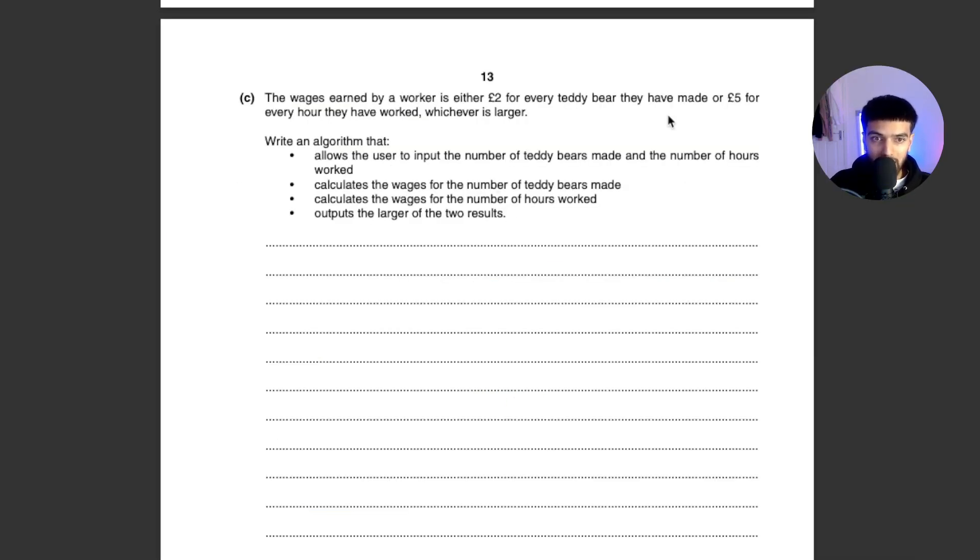Now let's look at the next question, which is the wages earned by workers - either two pounds for every teddy bear they have made, or five pounds every hour they've worked, whichever is larger. By looking at the first sentence, we already know there's going to be some sort of selection there because it says whichever is larger.